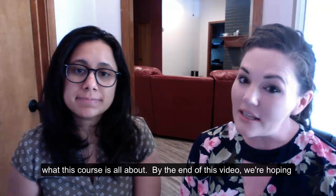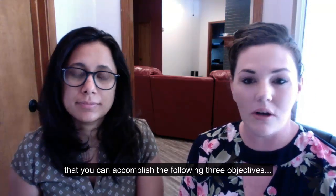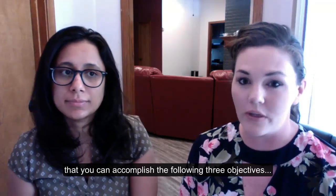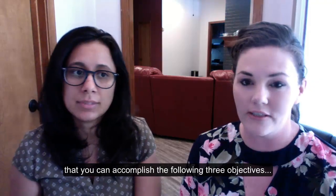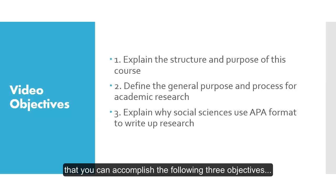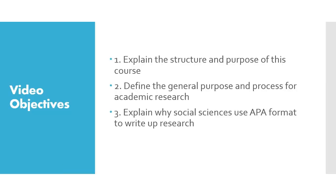By the end of this video, we're hoping that you accomplish the following three objectives: explain the structure and purpose of this course, define the general purpose and process for academic research, and explain why social sciences use APA format to write up research.